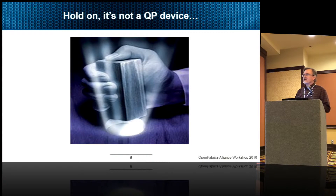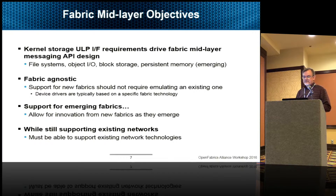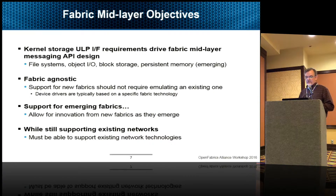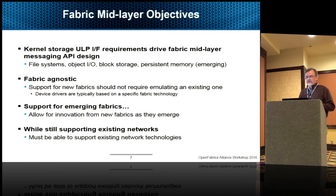Stan wanted to make sure we understood we're trying not to squeeze a square peg into a round hole. The objectives are to have a mid-layer with a messaging API design that will support file systems, block IO, object IO, and persistent memory. It should be fabric agnostic, support new fabrics without requiring them to emulate an existing one, and support emerging fabrics while allowing innovation and continuing to support existing fabrics. It's not trying to replace anything but to allow adding new fabrics as they come.